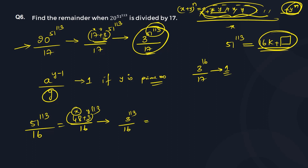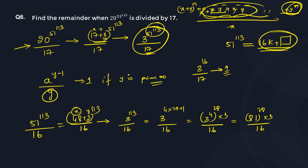This is 3^(4×28 + 1) divided by 16, because 4×28 = 112, and 112 + 1 = 113. So this becomes (3^4)^28 × 3 divided by 16. Now 3^4 is 81, so this is 81^28 × 3 divided by 16. Again, this is why I said this is lengthy.